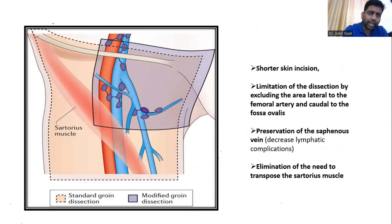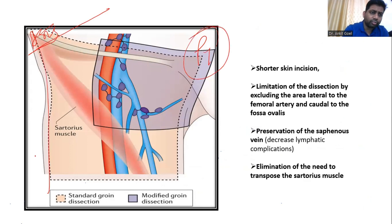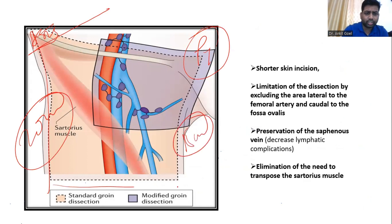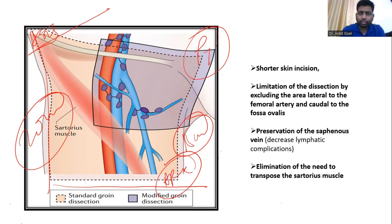The boundaries of the radical inguinal lymph node dissection are: from the anterior superior iliac spine to the pubic tubercle. Laterally it is 20 centimeters, medially it is 15 centimeters, and the apex of the femoral triangle forms the inferior boundary. This completes the management of penile cancer with respect to lymph node assessment.